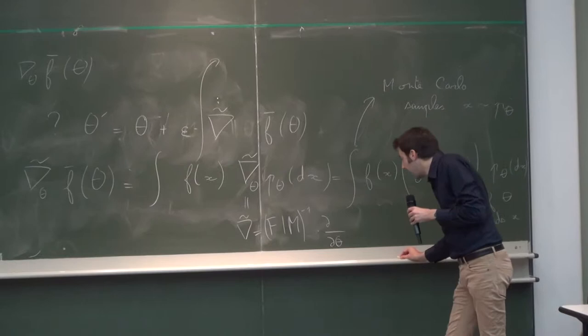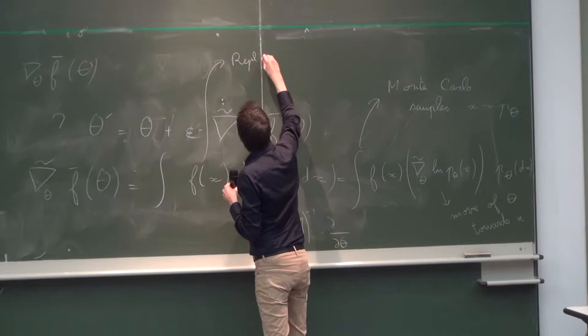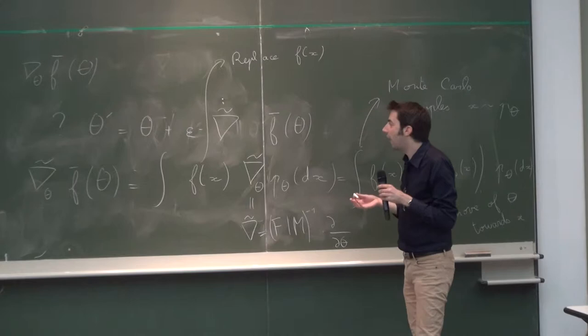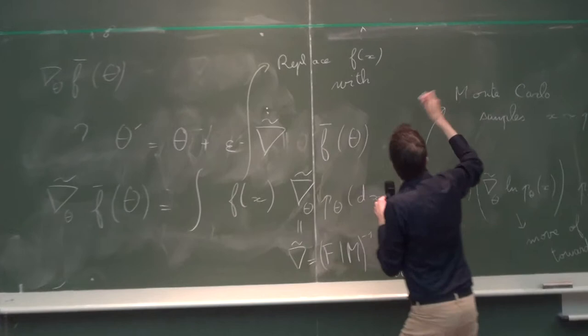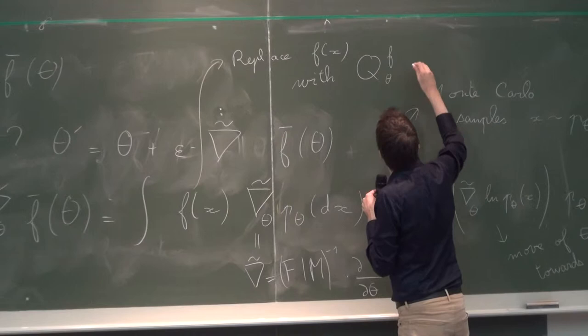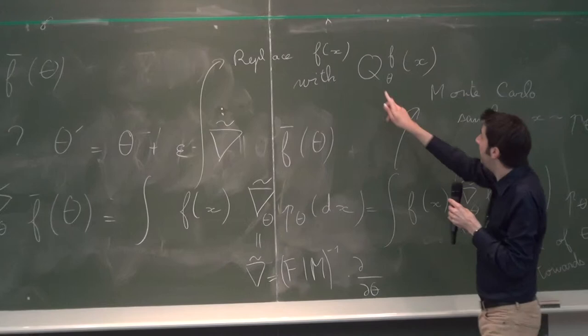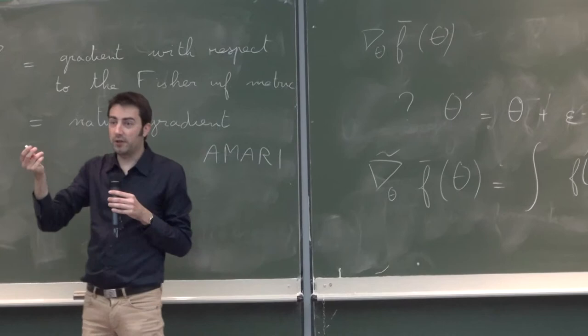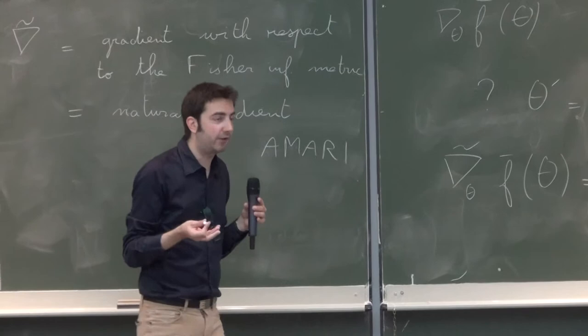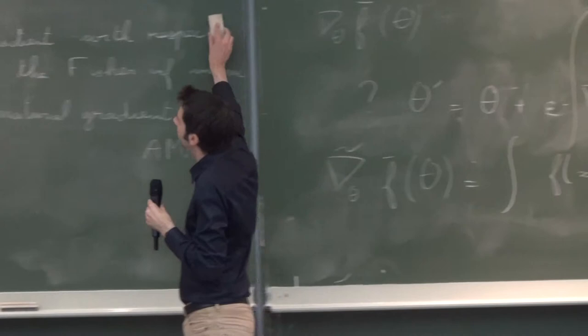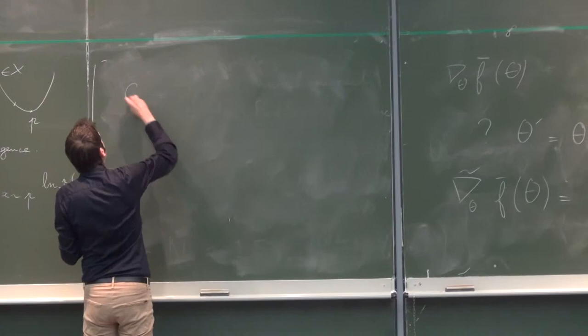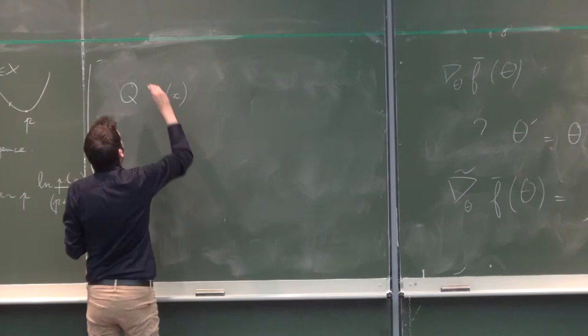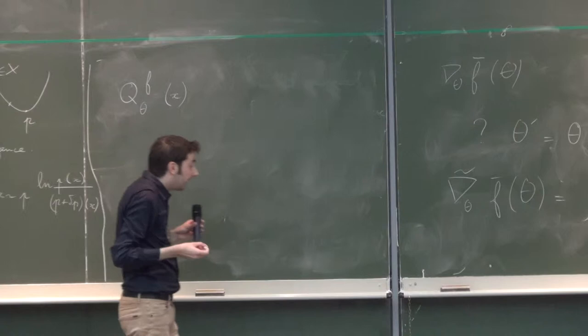So what you can do is replace f of x with an evaluation of how good x is according to your current beliefs. So I'm going to denote this by q f theta of x, and this will be a quantity that gives higher values for better points but that only depends on the ordering of points according to f and not on the numerical values of f. So you say that the quality of a point x ranked according to f and according to your current beliefs is: